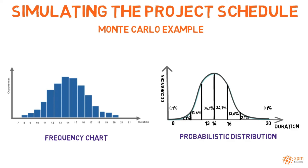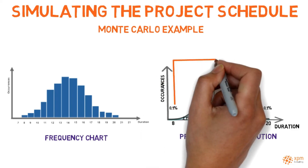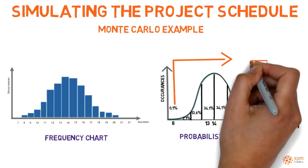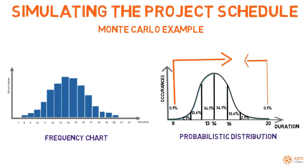The project manager can now determine that there is a likelihood of 0.1% of completing the project within the current scheduled duration of 8 weeks. To raise the level of confidence to 99.9%, the project duration would have to total 20 weeks.